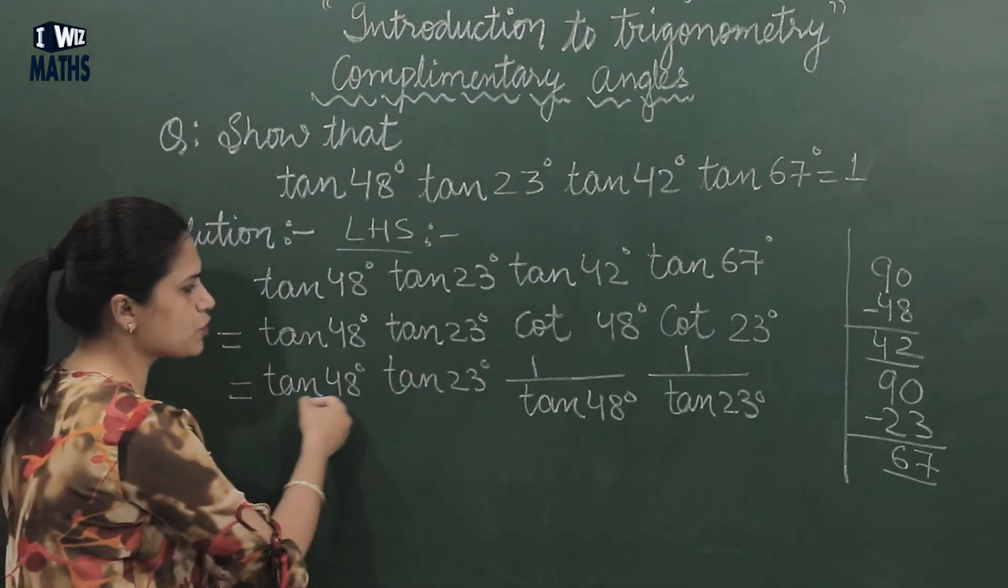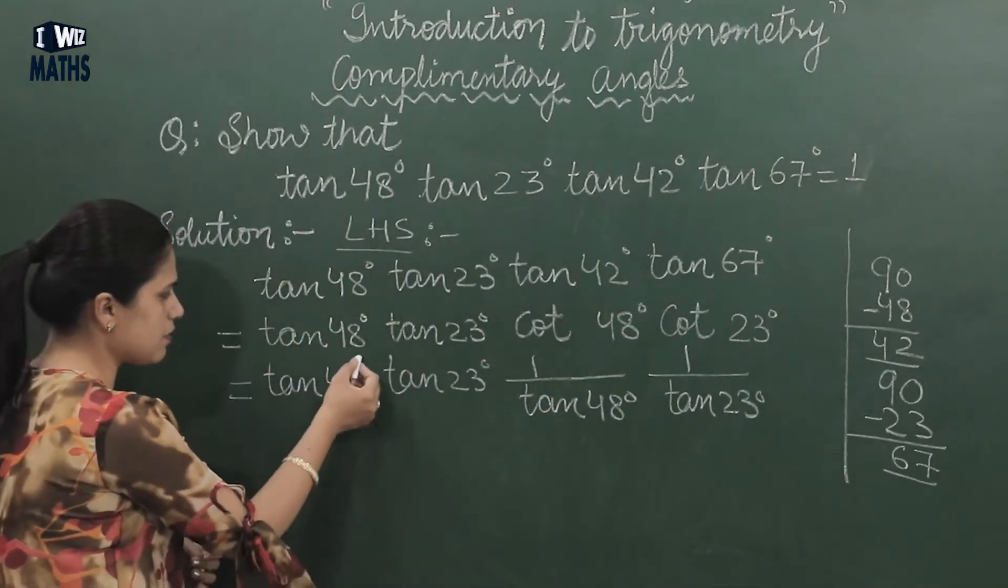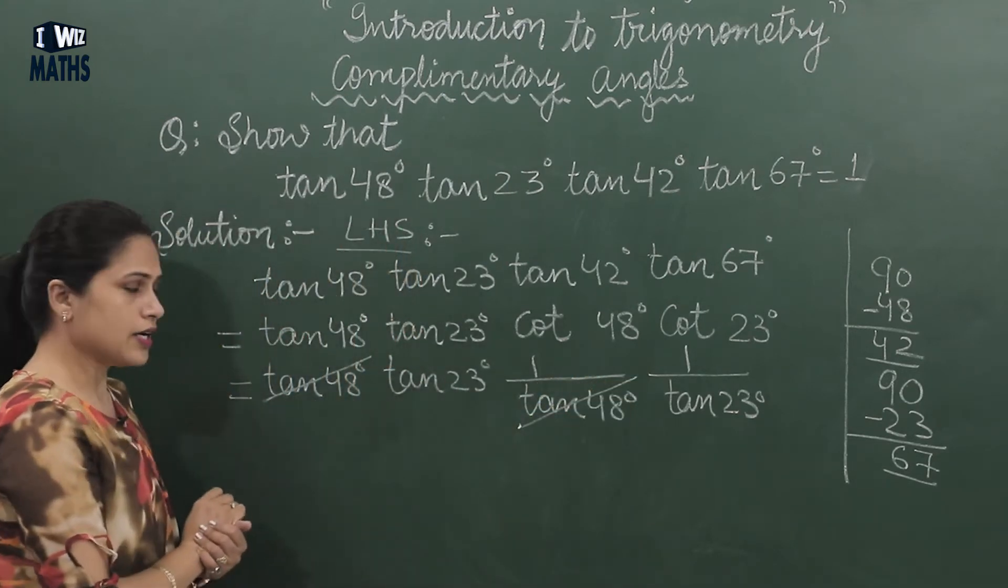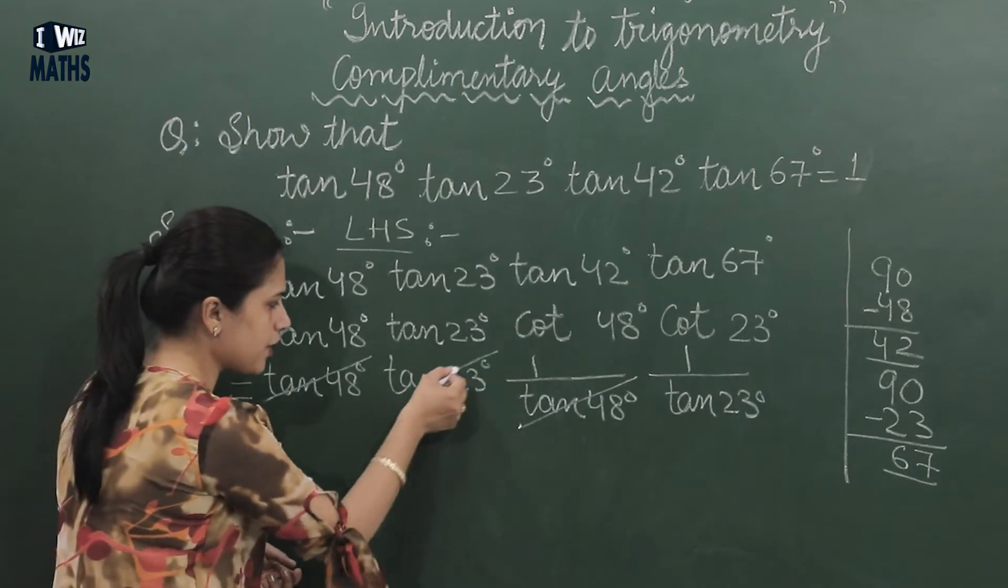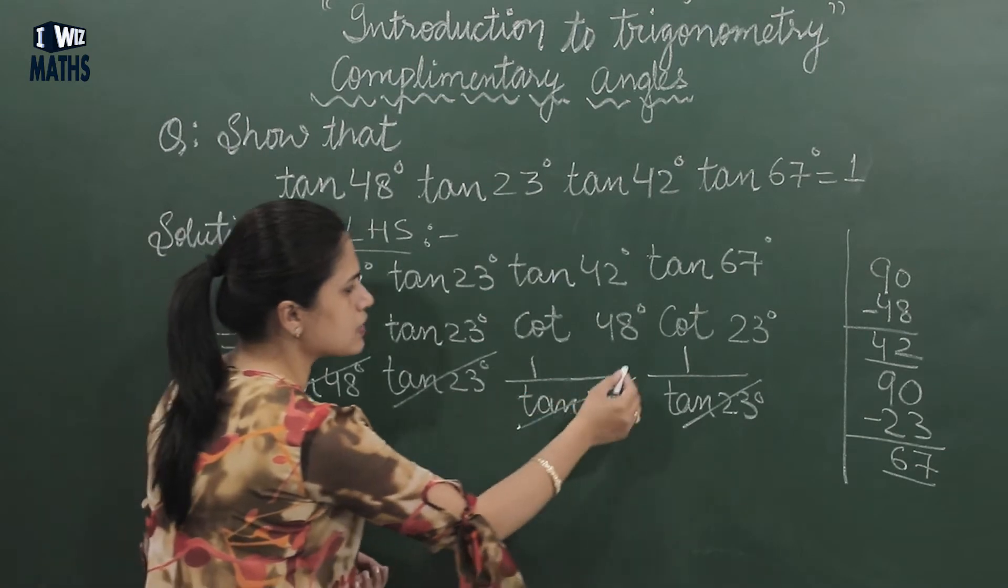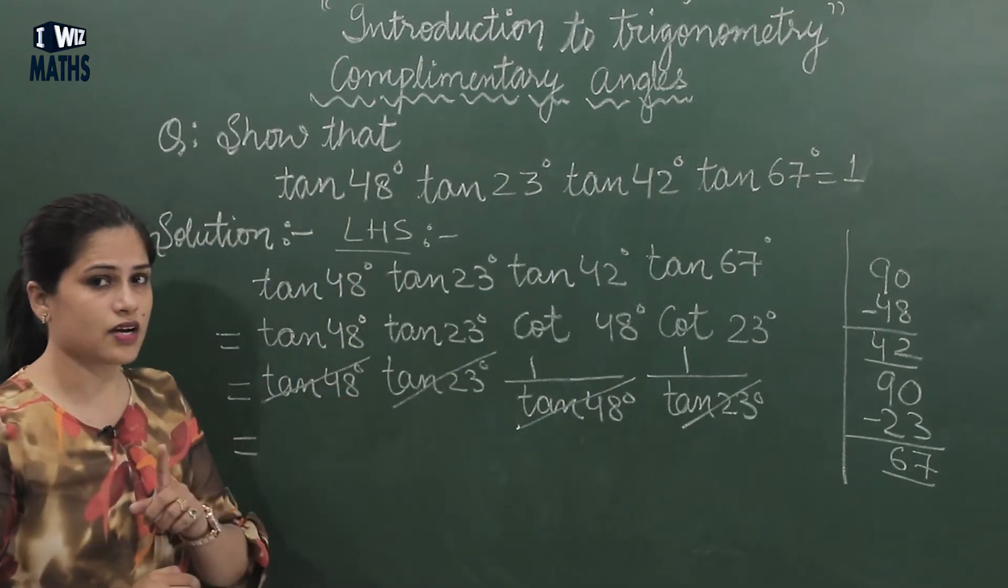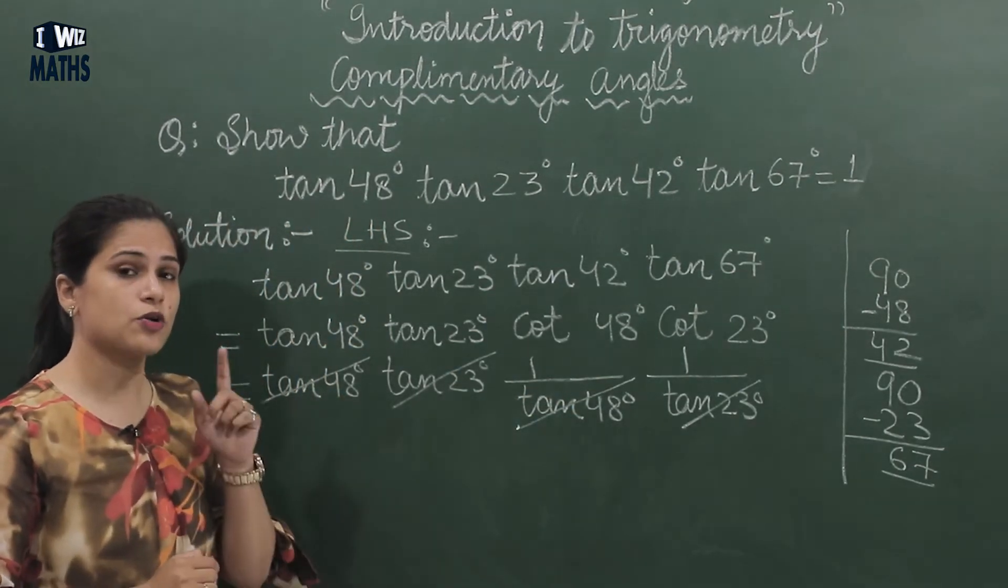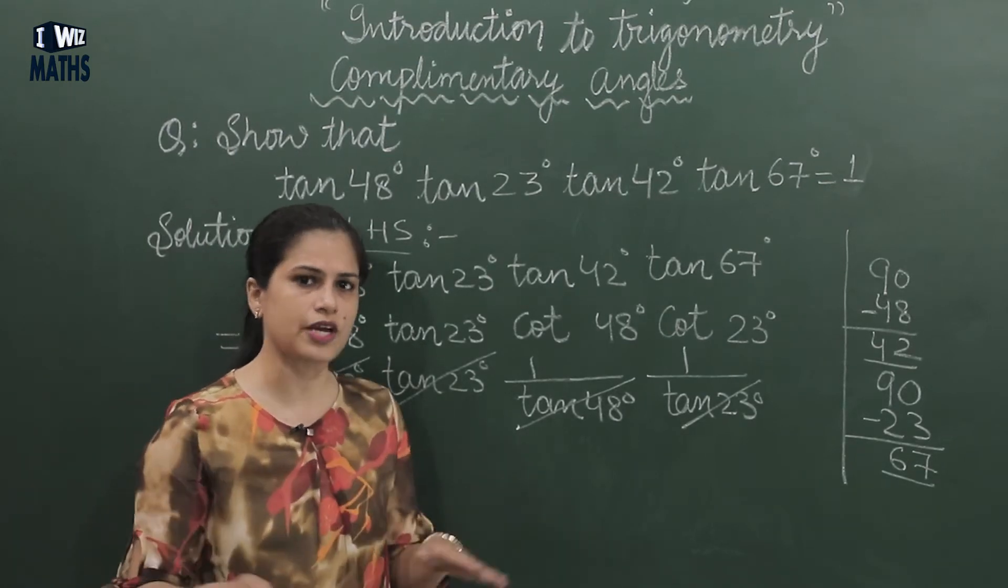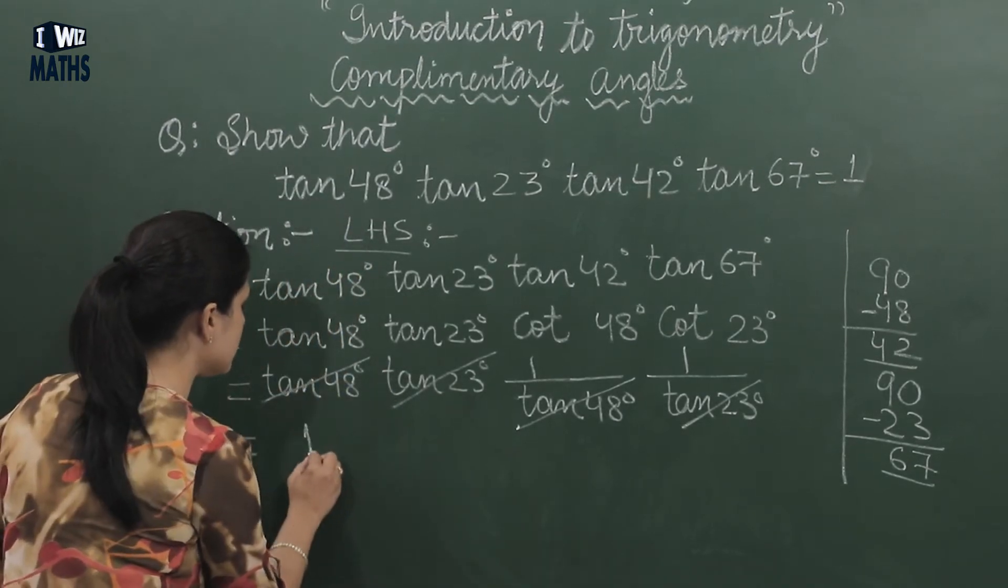Now see here, everything is in multiplication. This means we can cancel tan 48° with this tan 48° here, and this tan 23 we can cancel with this tan 23. After all cancellations, remember, here it's not zero, here it's one. Zero comes when we subtract, but when we cancel, after everything cancels, we get one.